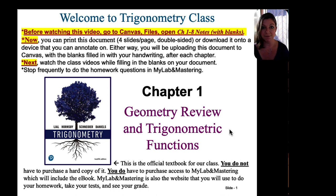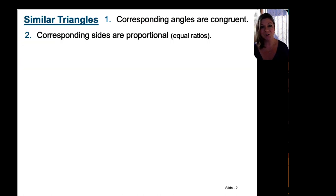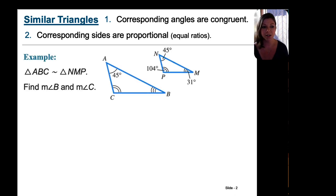Okay, first blanks to fill in right here: Chapter 1, Geometry Review and Trigonometric Functions. Good news about this being recorded — you can pause it right now and take more time to fill in the blanks, rewind if you want to hear something again. You can move at your own speed. To start the study of trigonometry, we must talk about similar triangles, which have two characteristics: their corresponding angles are congruent, and their corresponding sides are proportional — meaning their sides all have equal ratios.